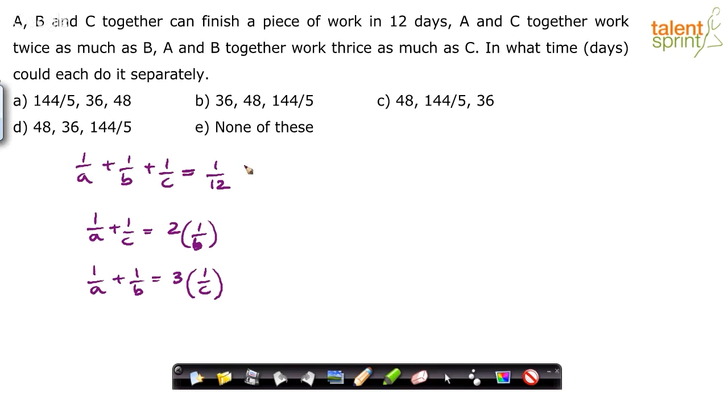So basically you see 3 equations and 3 unknown values, A, B and C. You can solve for it and get the required answers. Now how do you solve it in a smart way? Simply substitute in the first equation. See 1/A + 1/C = 2 times of B, so use the first two equations.